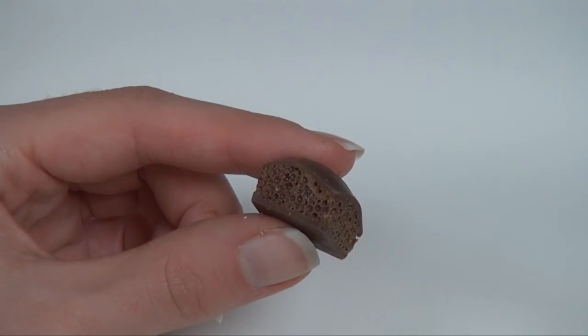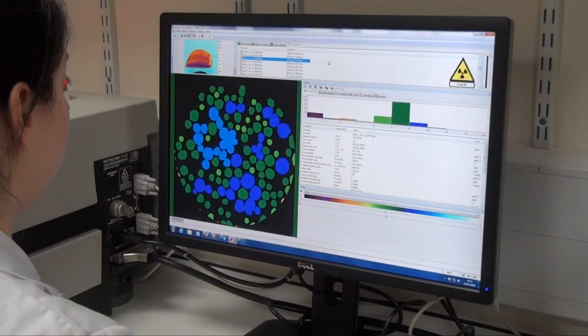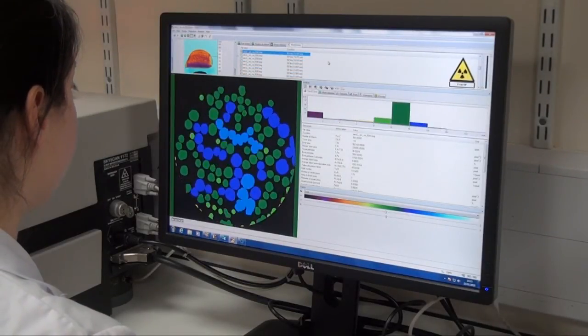Similarly, in the final example, the sizes of bubbles in a piece of aerated chocolate can be measured. These images show measurements for two-dimensional cross sections.